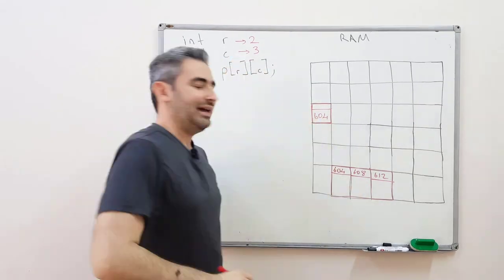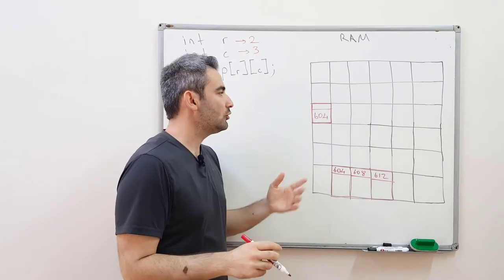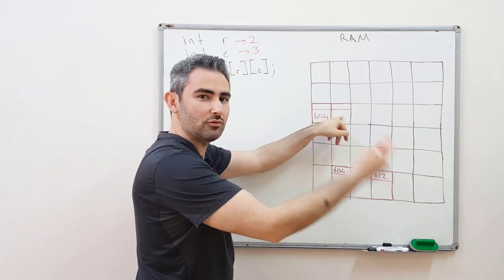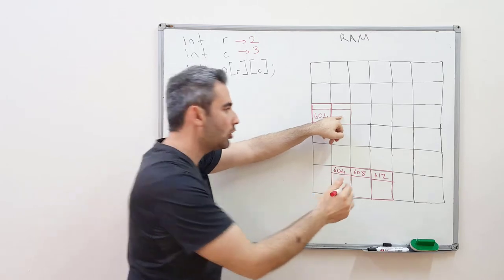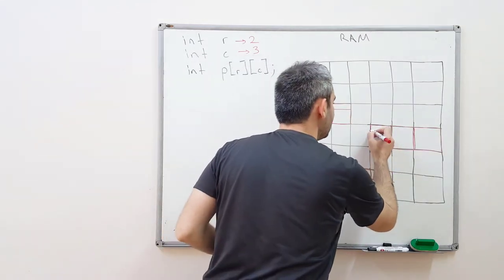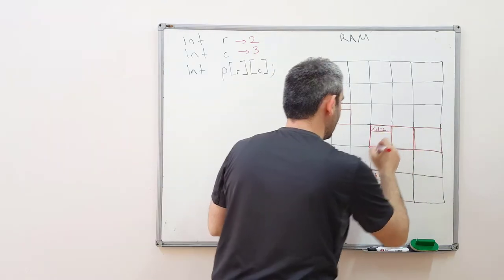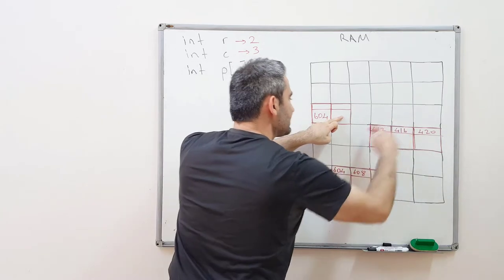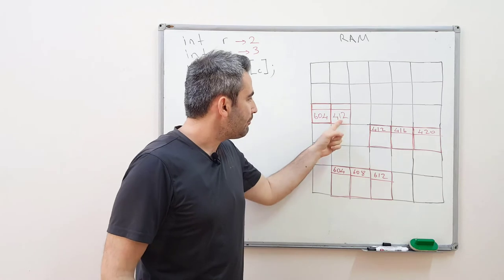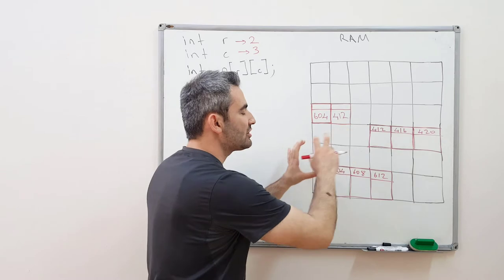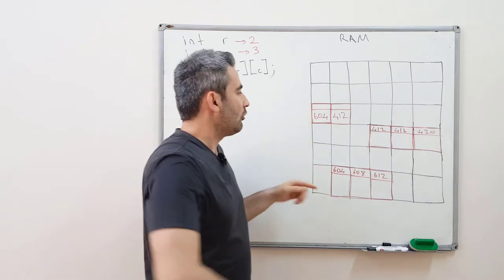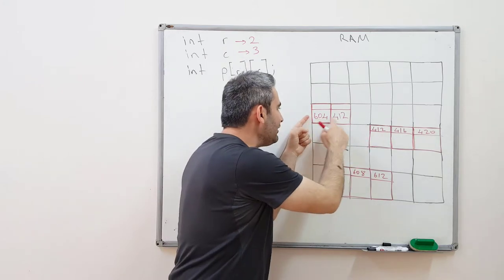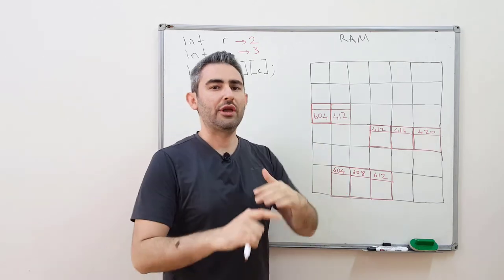My pointer holds the starting location 604, creating a one-dimensional array with three integers. Now I need another row. Think of it as doing this multiple times the same way — create another pointer, request 12 more bytes with malloc. That gives us a second row. The starting location of this row is 412, 416, 420. So think of it as defining two separate rows, each being a one-dimensional array.